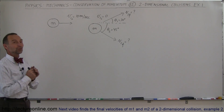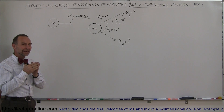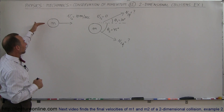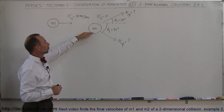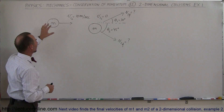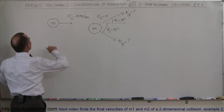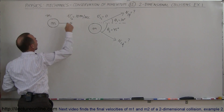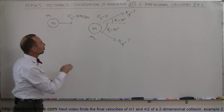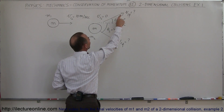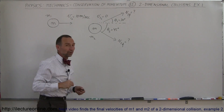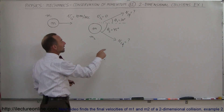Here we have an example where two masses collide such that after the collision they go in different directions. Mass 1 and mass 2 have the same mass. After the collision, mass 1 will go up at an angle of 30 degrees above the horizontal, and mass 2 will go down at an angle of 45 degrees below the horizontal. What will be their final velocities?